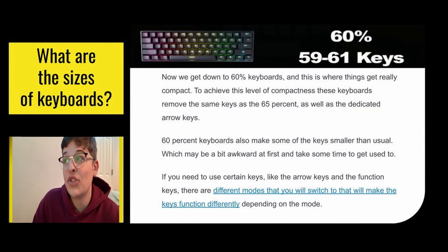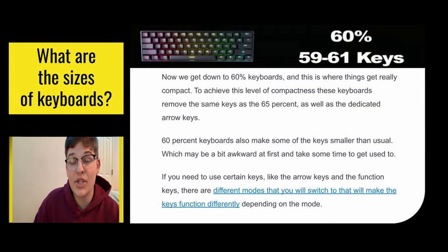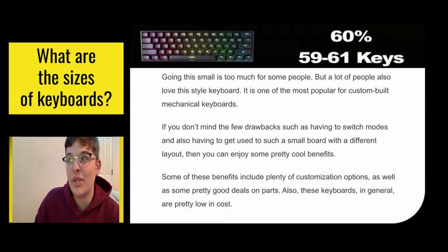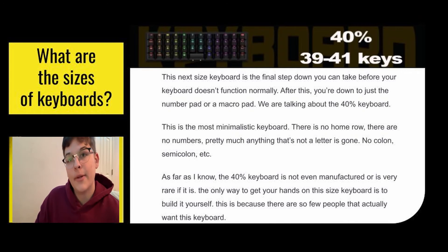Next we get down to the 60% keyboards — this is where things get really compact. These keyboards remove the same keys as the 65% as well as the dedicated arrow keys. They also make some keys smaller than usual, which may be awkward at first. If you need to use certain keys like the arrow keys or function keys, there are different modes you switch to in order to make the keys function differently depending on the mode. Going this small is too much for a lot of people, but it's one of the most popular for custom built mechanical keyboards. The benefits include plenty of customization options, good deals on parts, and these keyboards in general are pretty low cost.